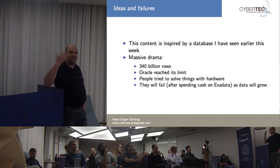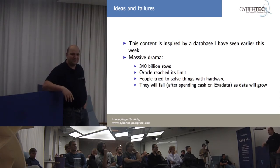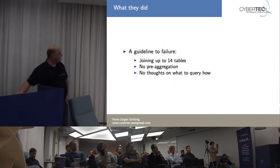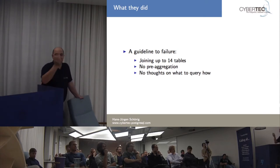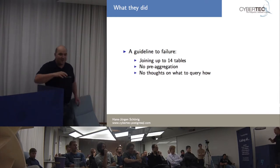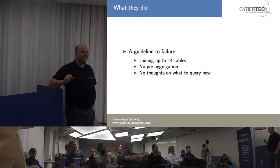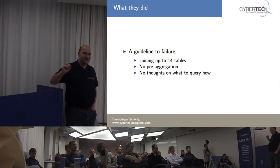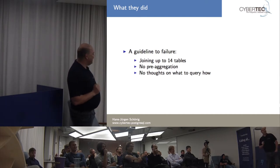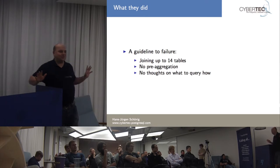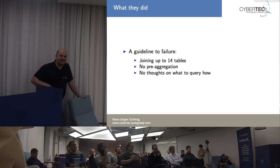People were trying to solve things with hardware. The price tag is something like 5 million, which is quite expensive just to not rewrite the queries. Guidelines to failure: we're talking about 340 billion rows, and those guys are running a join on 14 tables — and the second table they're joining to is 8 billion rows. The second problem is no pre-aggregation. Everything was a live calculation. And the result: 80 terabytes compressed, no pre-aggregation, joins with 14 tables.